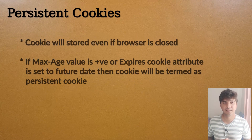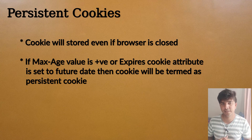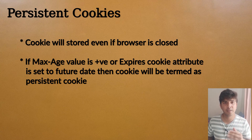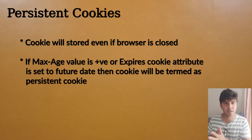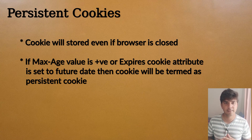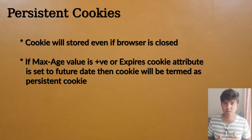On the other hand, if max age is set with some positive value — for example 23 seconds — or the expires value is set for some upcoming time, then the cookie will be stored even if you close the browser. These cookies are termed persistent cookies because even if you close the browser the cookie will be stored, and it will be applicable when you again open the browser and visit the same site.